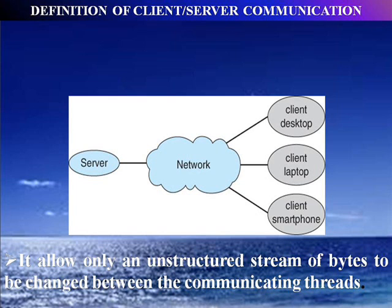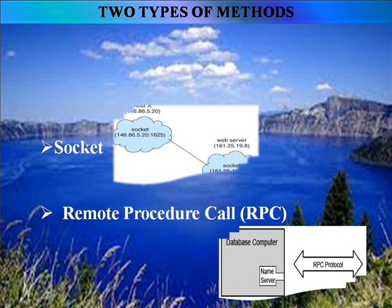Definition of client-server communication: it allows only an unstructured stream of bytes to be exchanged between the communicating threads. There are two types of methods: Socket and Remote Procedure Call, i.e., RPC.